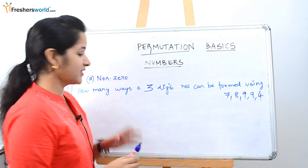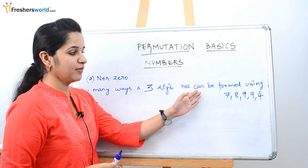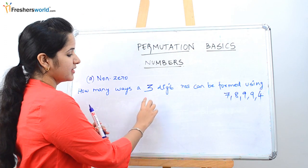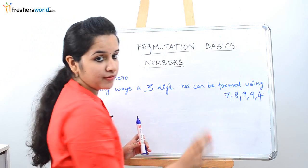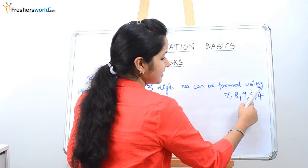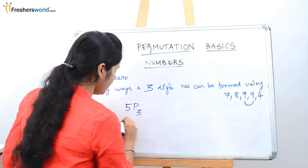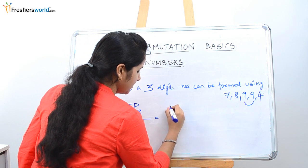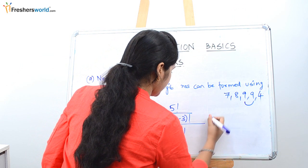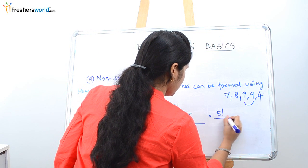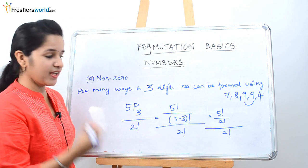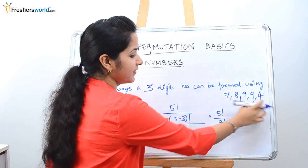In this question, they are asking how many ways a three-digit number can be formed using 7, 8, 9, 9, 4. They are asking us to form a three-digit number from five given numbers, so we write 5P3. The catch is that 9 is repeated twice, so we divide by 2 factorial. That gives 5 factorial divided by (5−3) factorial, divided by 2 factorial — which is 5 factorial divided by 2 factorial, divided by 2 factorial.